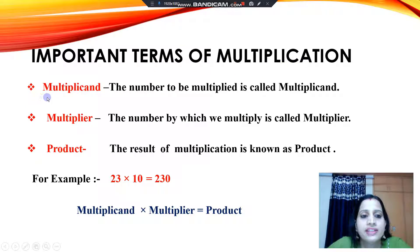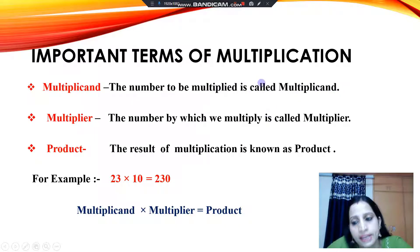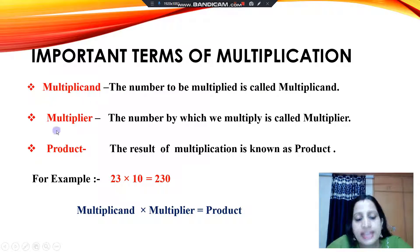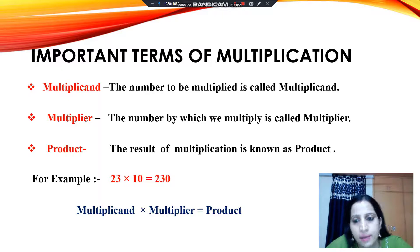The first term is multiplicand. The number to be multiplied is called multiplicand. The second is multiplier — the number by which we multiply is called multiplier.